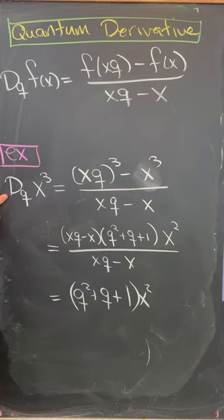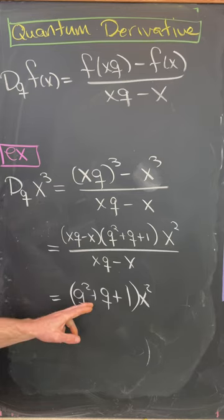So we can, without too much work, find the quantum derivative of x cubed, which is q squared plus q plus 1, times x squared.